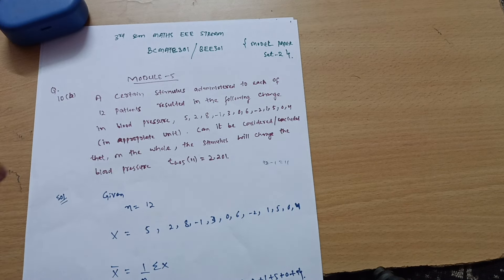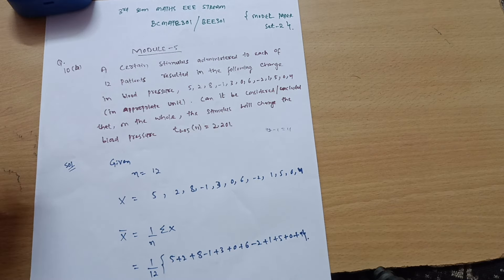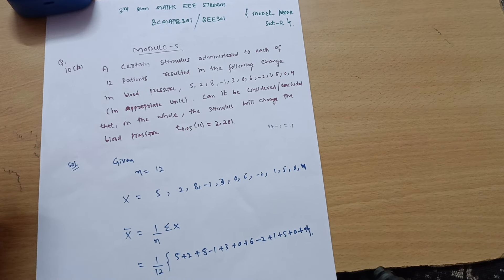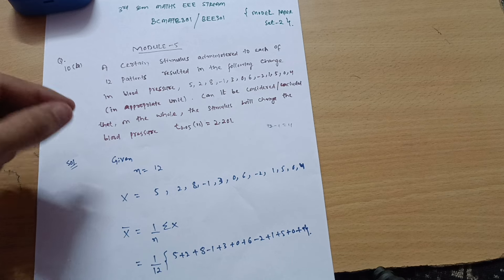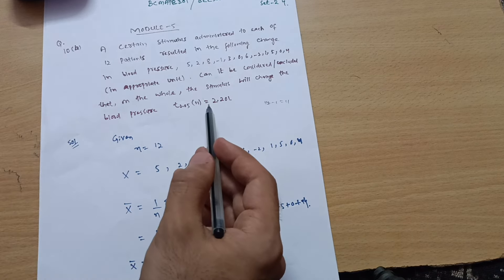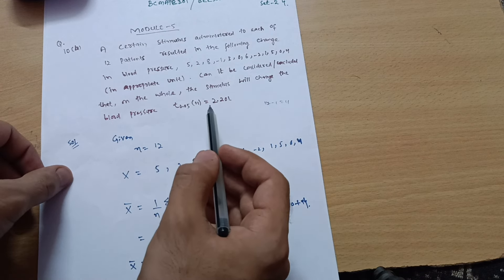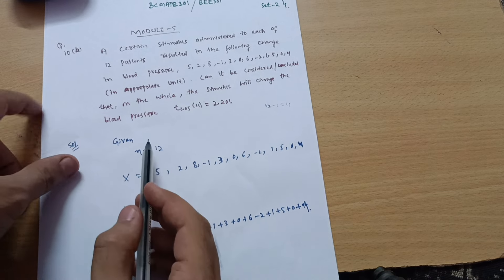So, what we are usually doing in the T square distribution, as I earlier told you, this model is totally, purely based on the formulas. You need to put down the values in the formula and get down the answers. If we are getting less than the given value for this T, then hypothesis will be accepted. If we are getting the value more than 2.201, then hypothesis will be rejected.